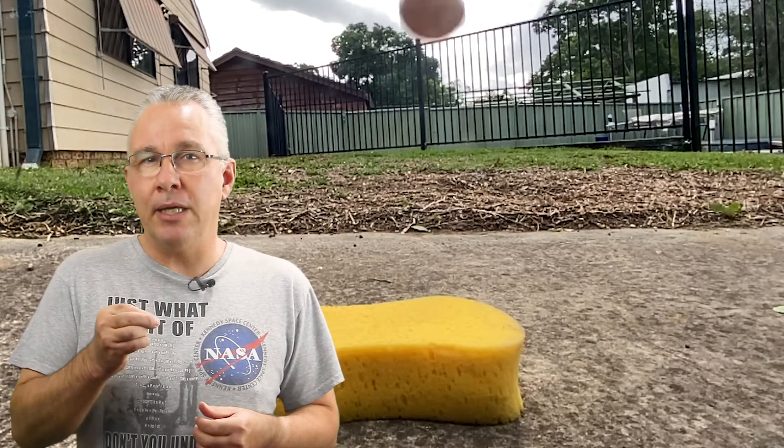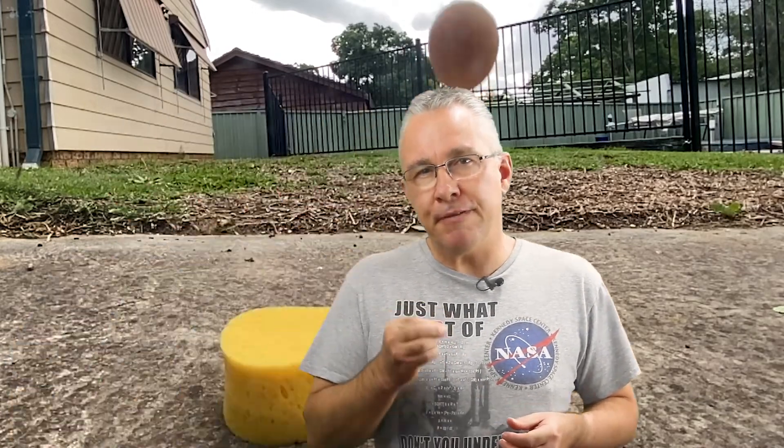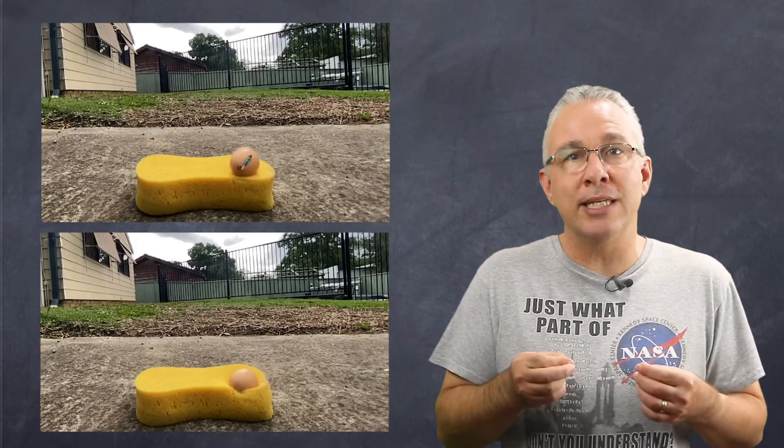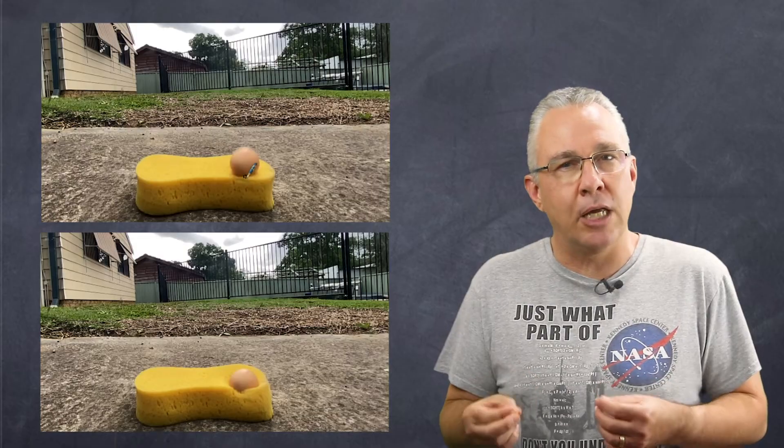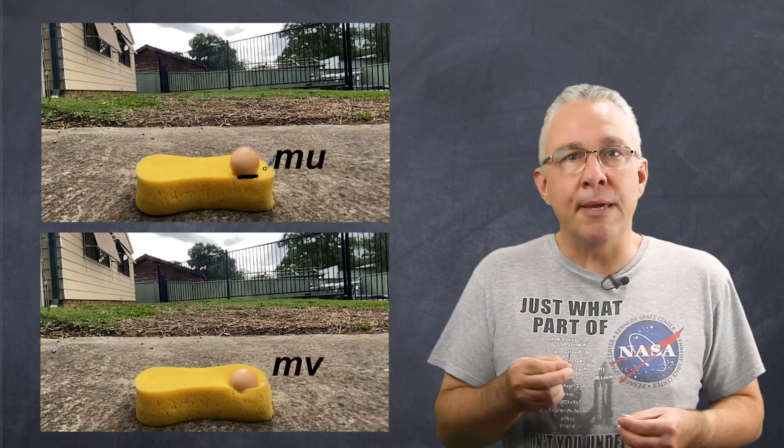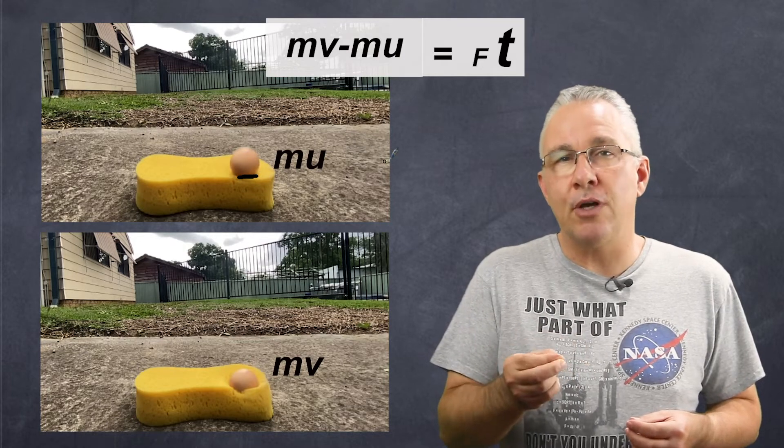Now what about dropping it on the sponge? The sponge in effect increases the time for the egg to stop, so as a result the force that it experiences ends up being much lower. So the same change in momentum, the same impulse, but different forces due to different times.